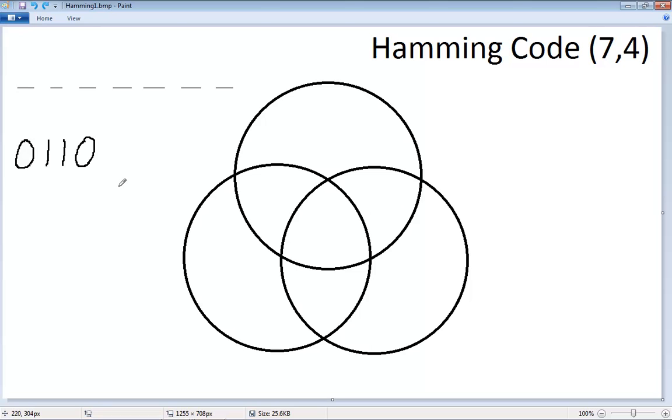We're going to write the data into this Venn diagram. We are writing the data by first selecting data space 1, and that's where our first 0 goes. This is data space 1, then data space 2, and that's our 1. So this is D1, D2, D3, and finally D4.